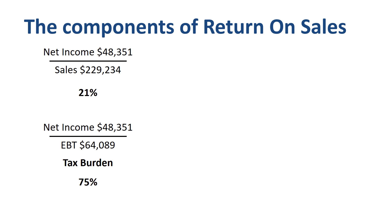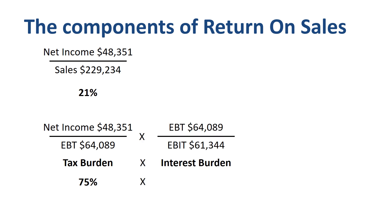That effective tax rate is fairly low, but not unusual for a multinational company that is known for optimizing its tax planning. Earnings before taxes over earnings before interest and taxes, which is called interest burden, is 104%. This is fairly unusual, as for most companies earnings before taxes would be lower than earnings before interest and taxes. At Apple, the interest and dividend income is higher than interest expense, therefore earnings before taxes is higher than earnings before interest and taxes.